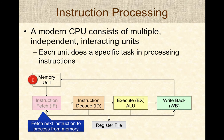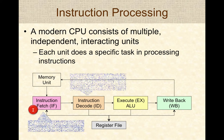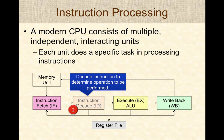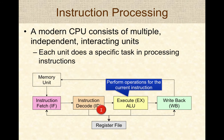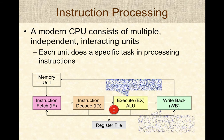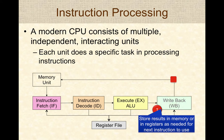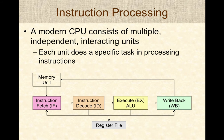First, instructions are fetched from memory by the instruction fetch unit. Next, the instruction is decoded to figure out what type of operation it is performing. Then, the ALU actually performs the task and generates outputs, and the results are stored back into memory for the next instruction to use. This cycle keeps repeating as the CPU continues to process instructions in a program, one instruction at a time.